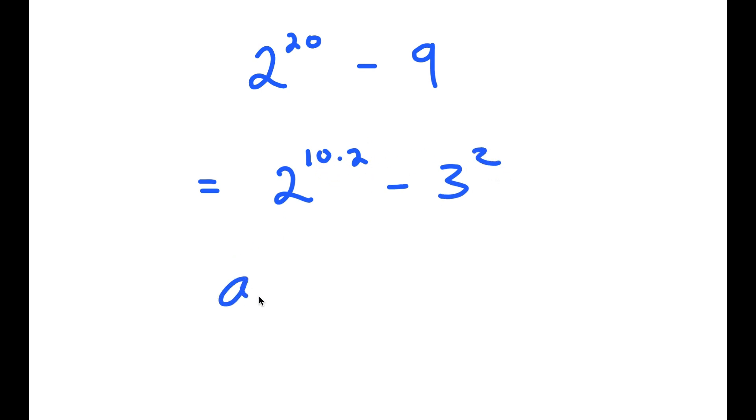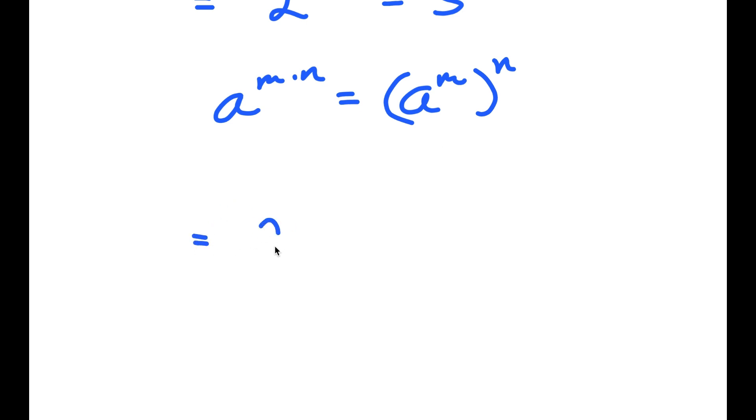And the reason I'm doing this is so I can use the property a to the power of m times n is equal to a to the power of m to the power of n. So 2 to the power of 10 times 2 turns into 2 to the power of 10 to the power of 2, and I have this minus 3 squared.